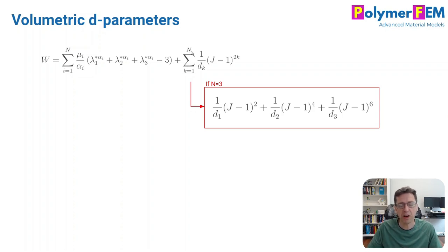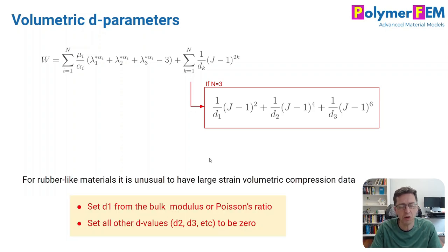If we just specify n to be equal to 3, we'll see that these are the terms that contribute to the energy in volumetric deformations. The point here is that in most cases when you use the Ogden model, you don't typically have information about how the bulk modulus changes with volumetric strain. So what you need to do is to typically just ignore the last terms here.